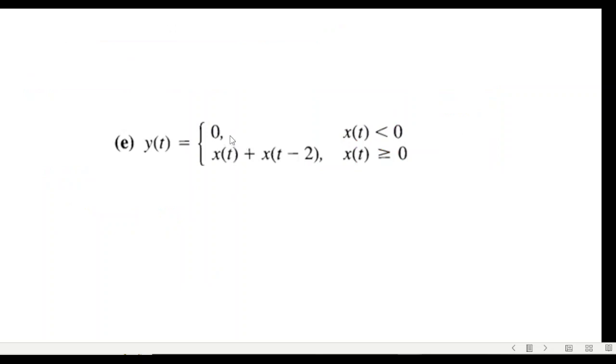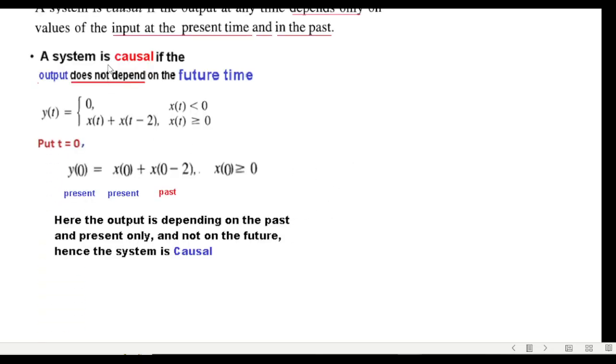The next example is similar but it is the time is x(t) and I don't think it will make any difference in this case. So we're just following the same as the previous example, putting t equals zero. We can see present, present, and past, and therefore this system is also causal.